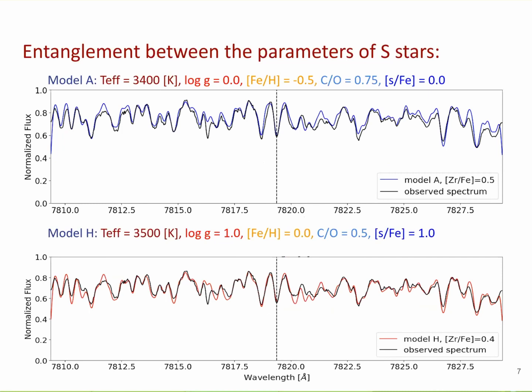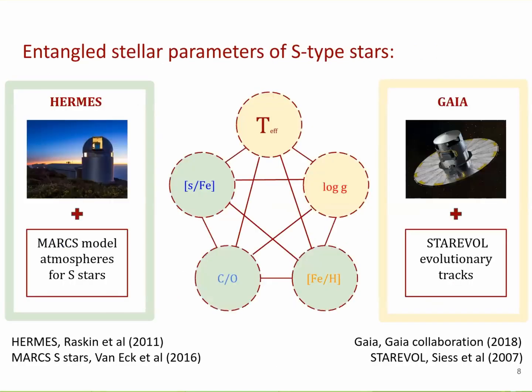To illustrate parameter entanglement, I am comparing two models — model A and model H — with completely different sets of atmospheric parameters, compared against an observed high-resolution spectrum. In many spectral windows in the optical, it is really difficult to differentiate which model reproduces the observed spectrum best. So a high-resolution spectrum alone is not sufficient to provide accurate parameter estimates. We therefore developed a methodology using high-resolution spectra from the Hermes spectrograph at the Mercator Telescope at La Palma, combined with Gaia parallaxes and appropriate model atmospheres and evolutionary tracks to disentangle this complex parameter space.